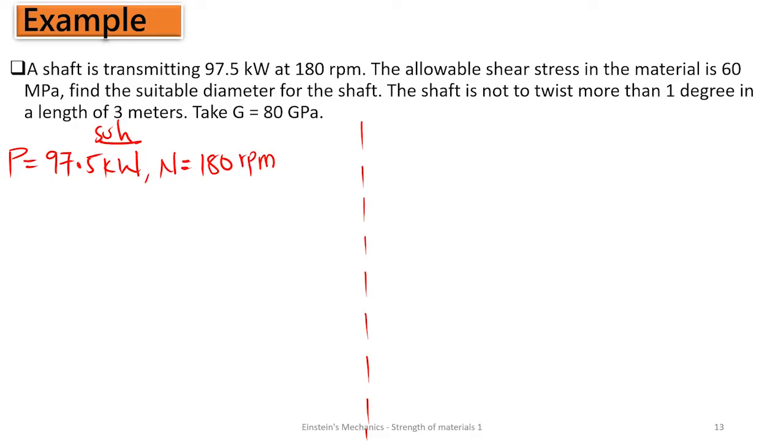The allowable shear stress of the material is 60 MPa. That's our shear stress, 60 MPa, which equals 60 Newton per millimeter squared. We can see that the shaft is not allowed to twist more than one degree.